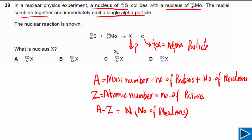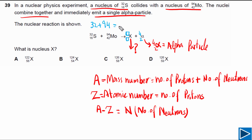For any nuclear reaction, the mass number on the left side has to be equal to the mass number on the right side. The alpha particle is in fact a helium nucleus — it has two protons and two neutrons, so its atomic number is 2 and its mass number is 4. For particle X, we assign unknown boxes for its atomic number and mass number, and equate both sides.